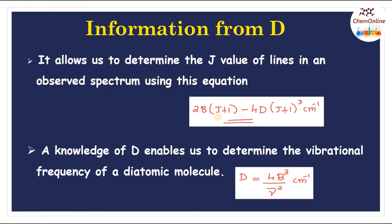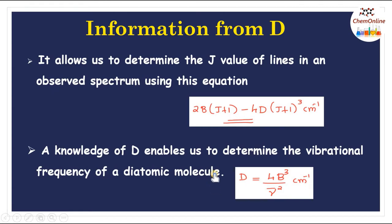The distortion constant D provides useful information. First, it allows us to determine the J value of lines in an observed spectrum using the equation 2B(J+1) − 4D(J+1)³. If a few transitions have been measured, measuring D gives unique values for B, D, and J. Second, a knowledge of D enables us to determine the vibrational frequency of a diatomic molecule, since D = 4B³/ν̄², so ν̄ can be derived from this relation.